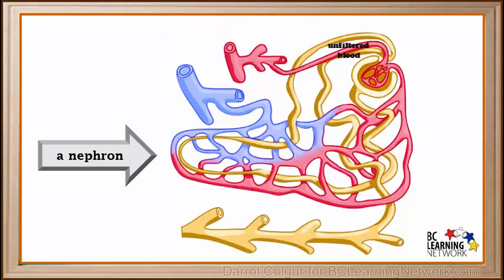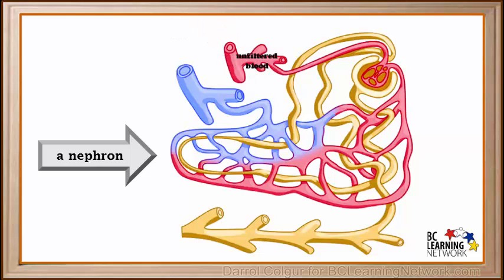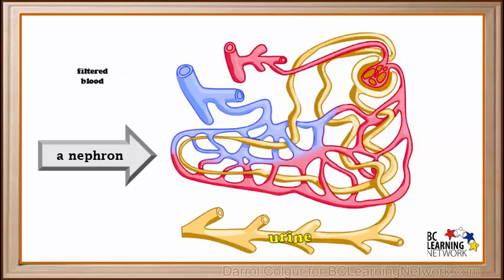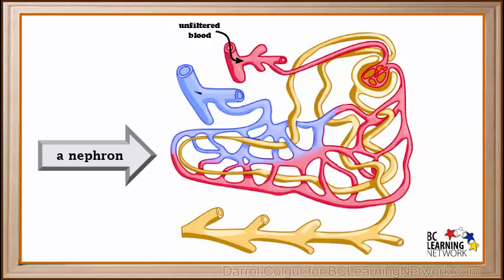Unfiltered blood passes through the nephron where it is gradually filtered. The filtered blood then goes into the inferior vena cava and back to the heart. The liquid filtered out of the blood is called the filtrate, and as it passes through the yellow tubules it becomes urine. Urine contains wastes filtered from the blood. This process is actually much more complex than shown here, and you'll learn more about it in later biology courses.